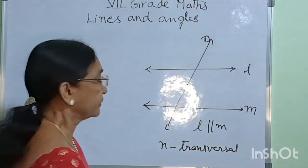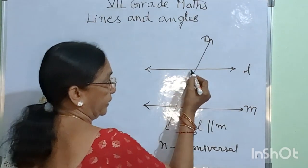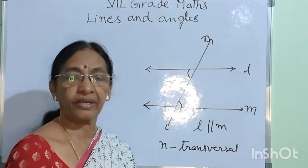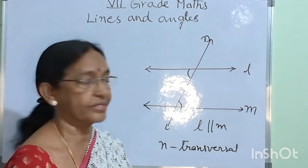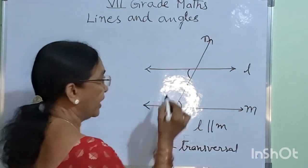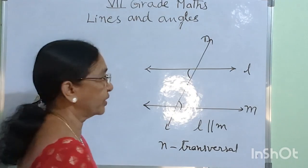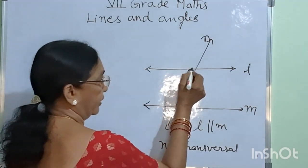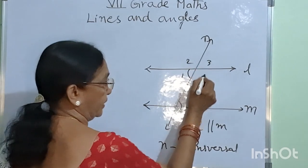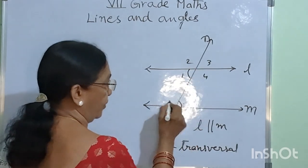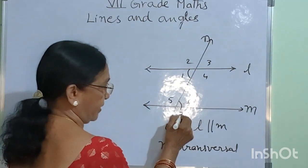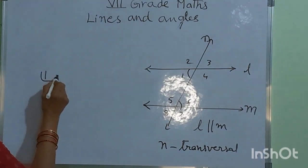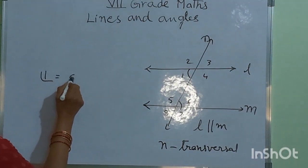So then, the alternate interior angles are equal. Each set of alternate interior angles are equal. These two are called alternate interior angles. So let the angles be labeled 1, 2, 3, 4, 5, 6, 7, 8. So angle 1 is equal to angle 6.